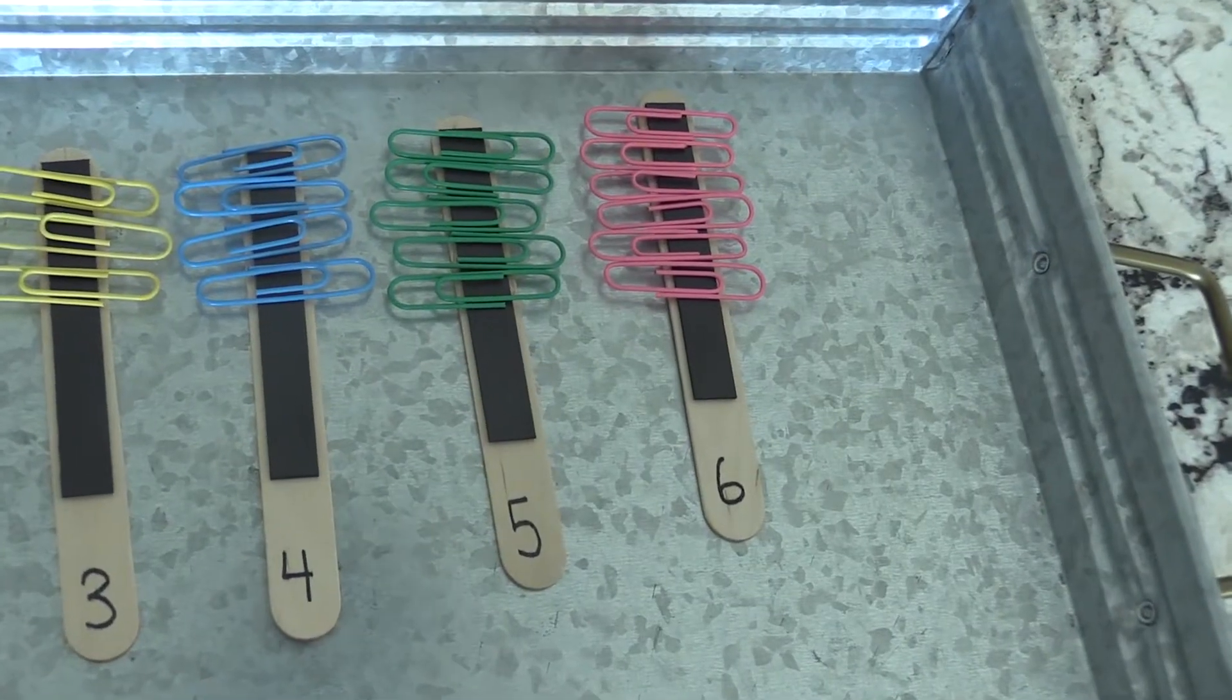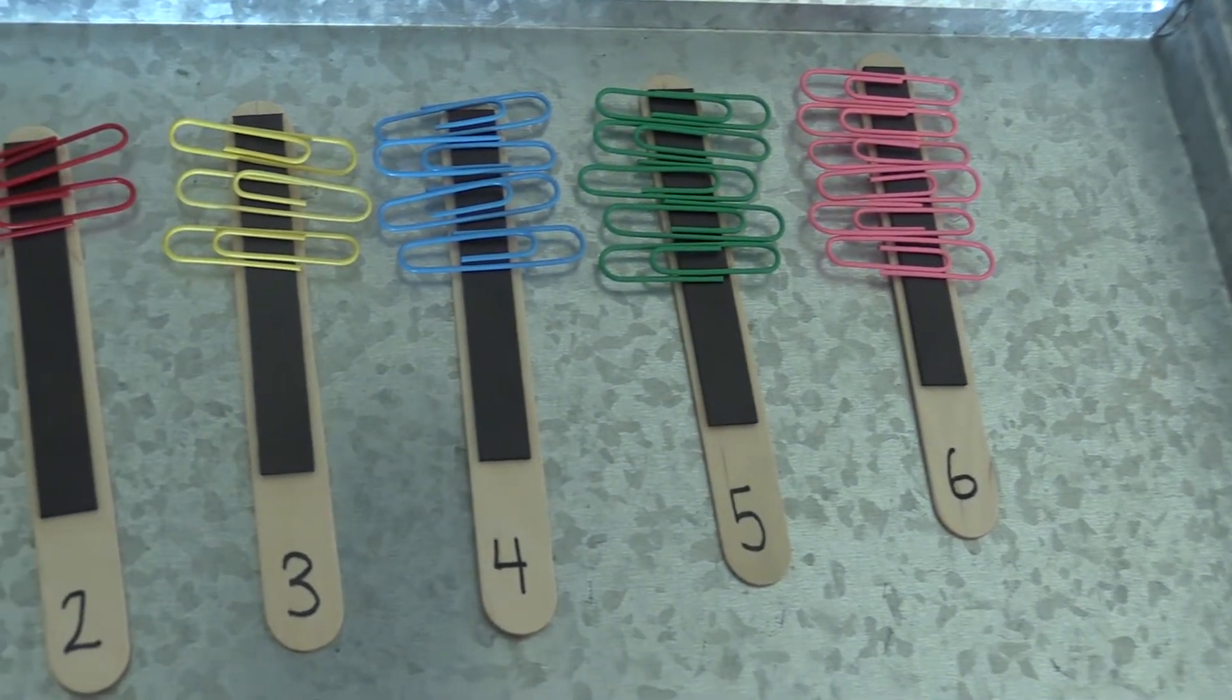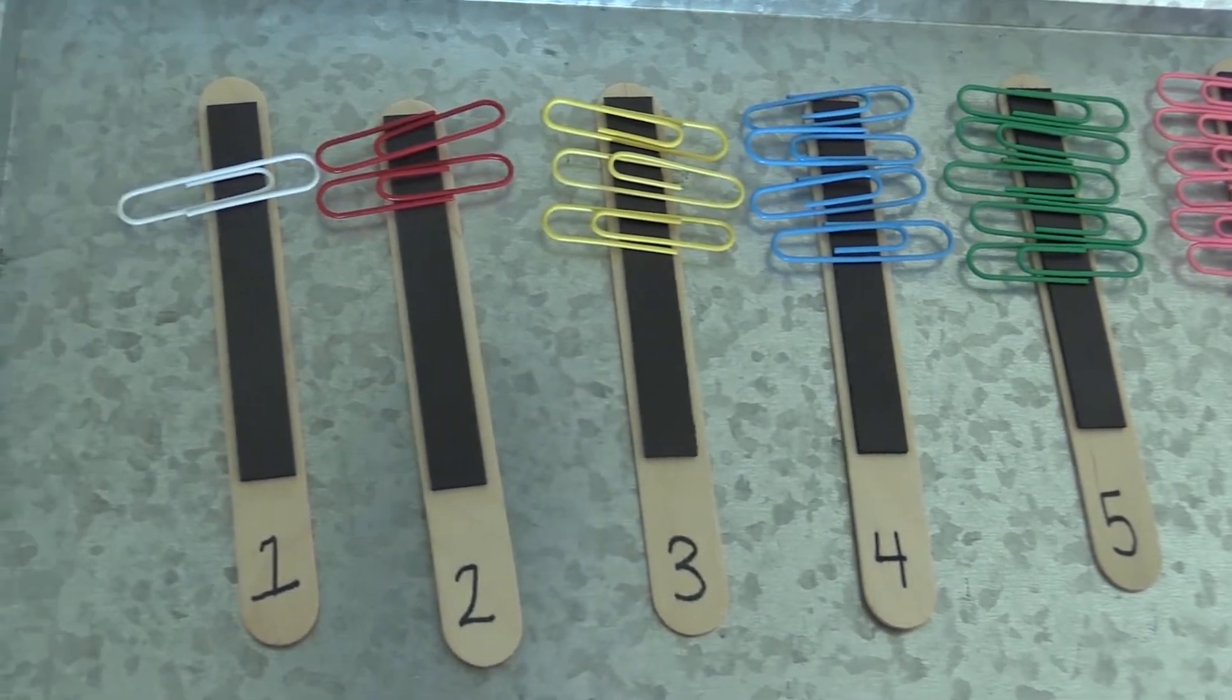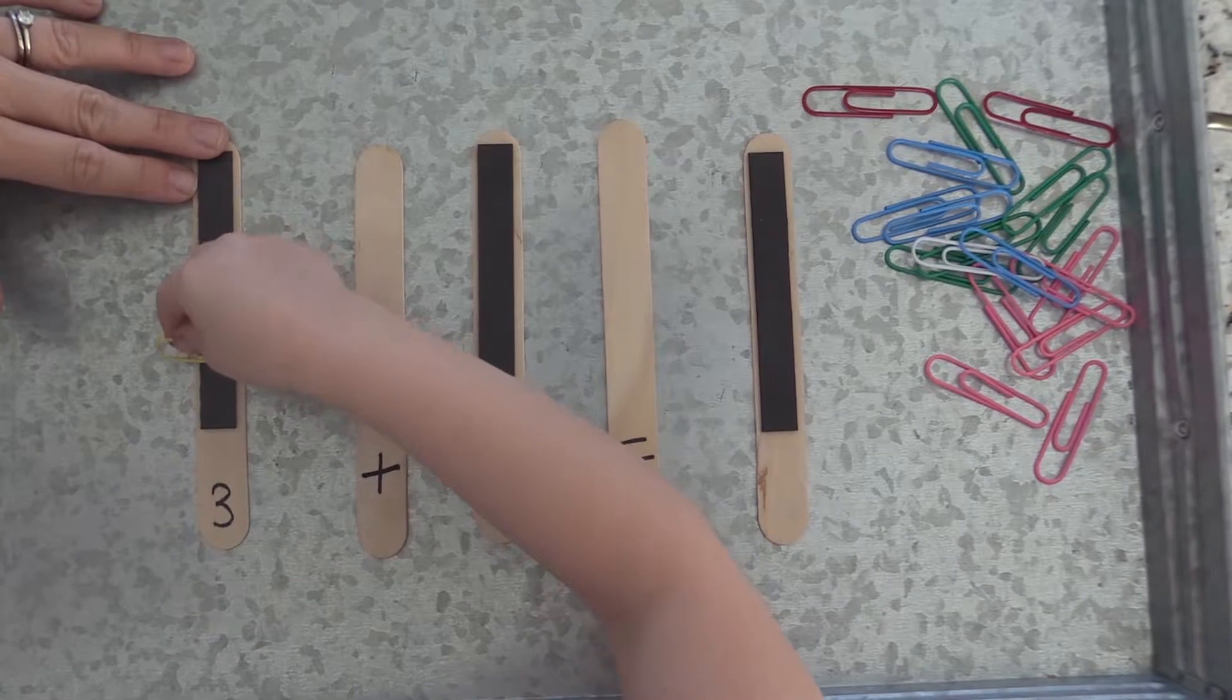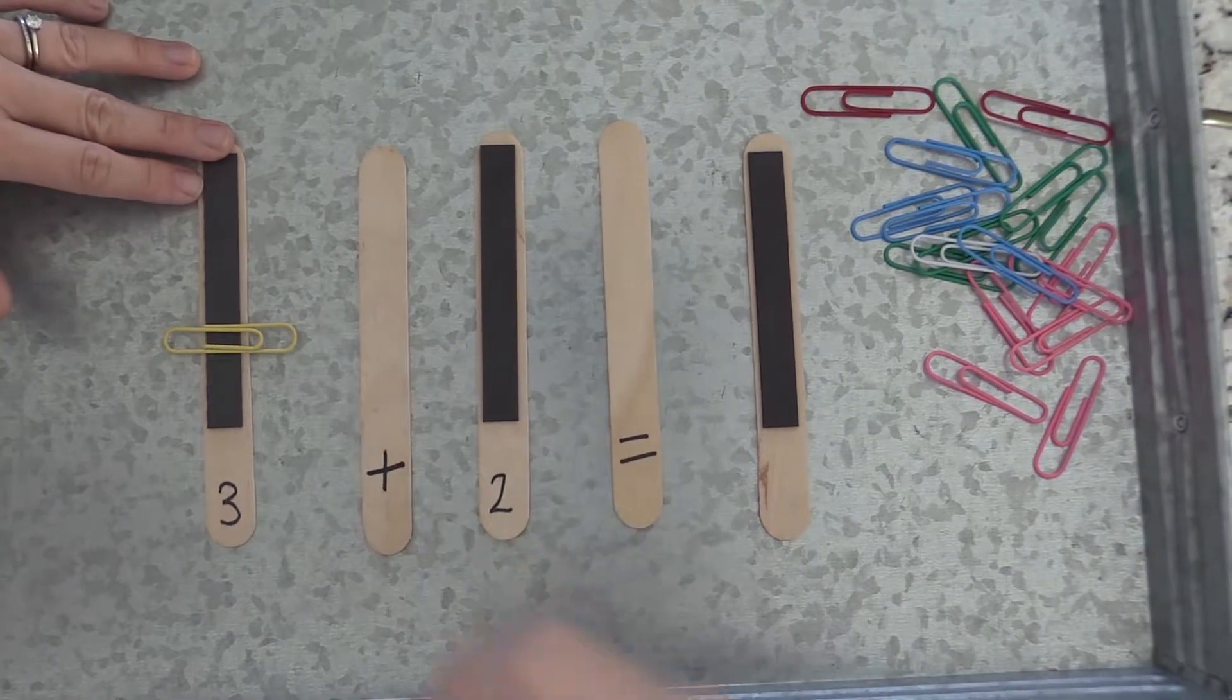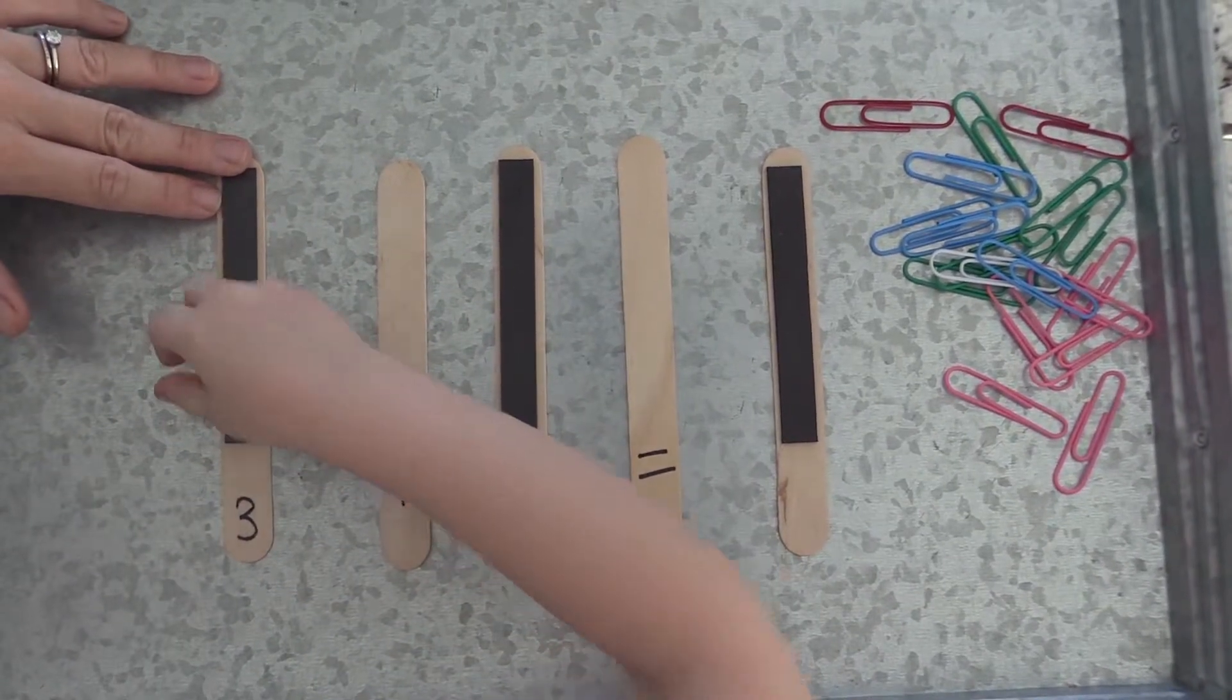There are many opportunities to incorporate math with your preschooler by counting sticks, counting colors, counting paper clips, and if ready, basic addition allowing the preschooler to count through the steps adding paper clips.